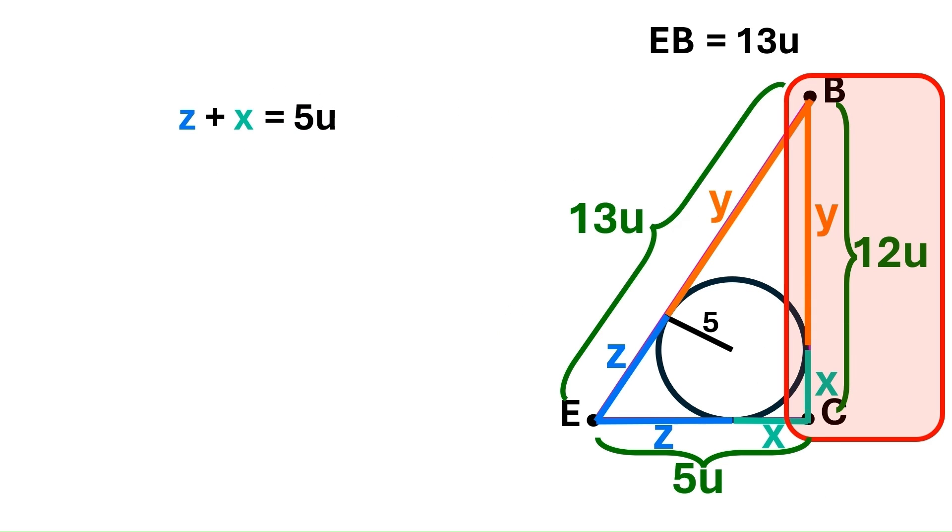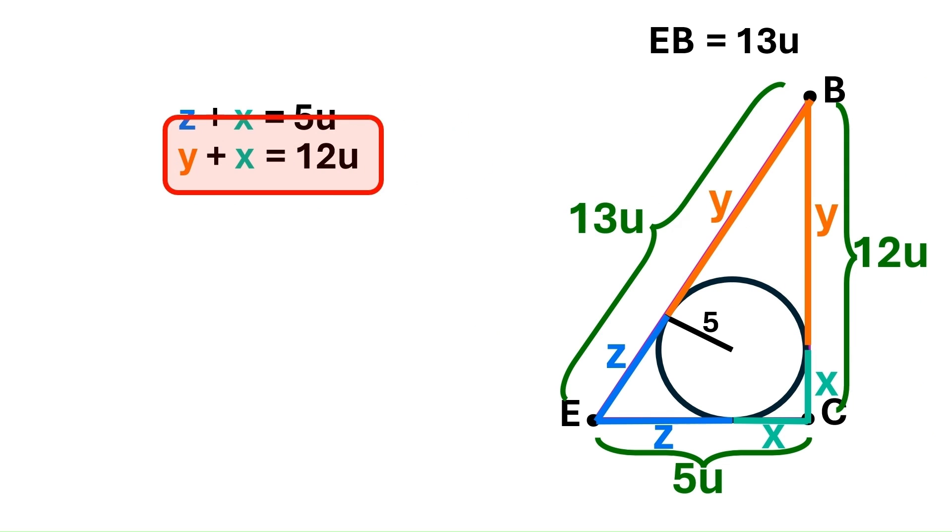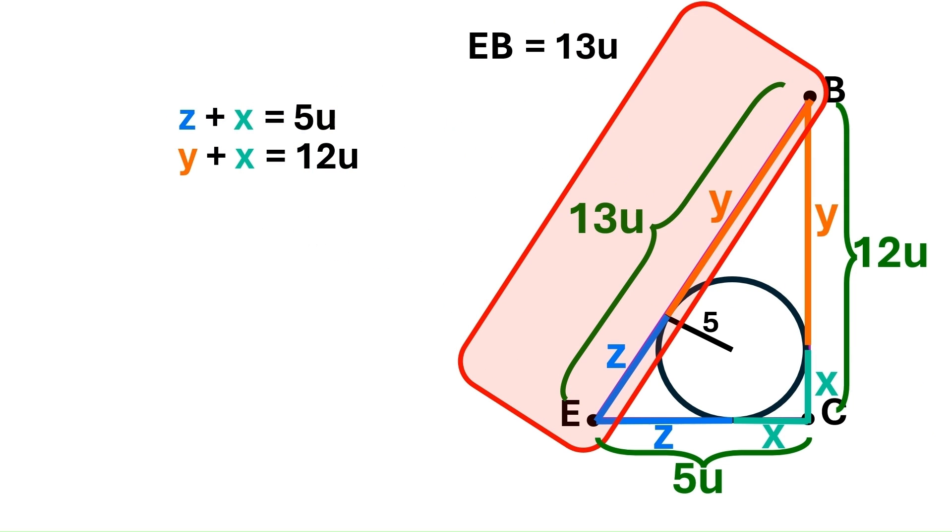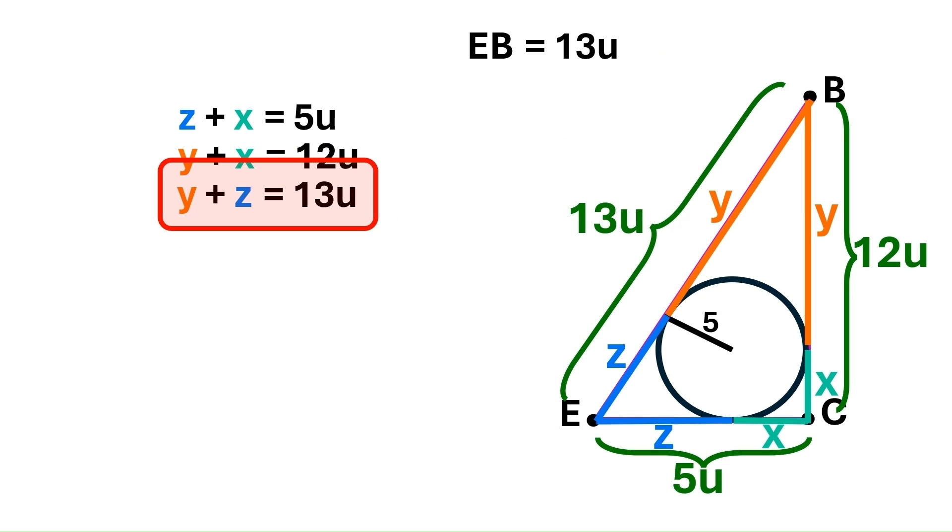Next we see over here that Y plus X equals 12U. So let's write that down too, like this. Finally, we see on this side that Y plus Z equals 13U. And we'll put that in our list as well.